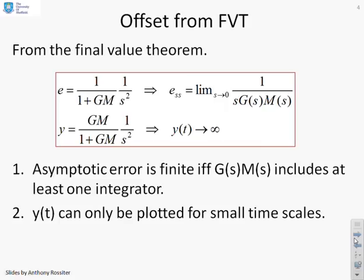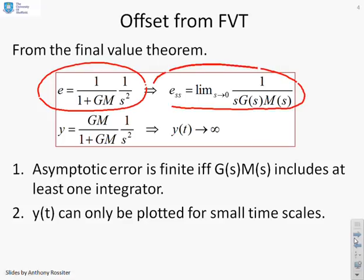A reminder then of the formula for finding offsets. The error as a Laplace transform is 1 over 1 plus GM times 1 over s squared. If I apply the final value theorem I get this formula here: the limit as s goes to 0 of 1 over s times G times M.